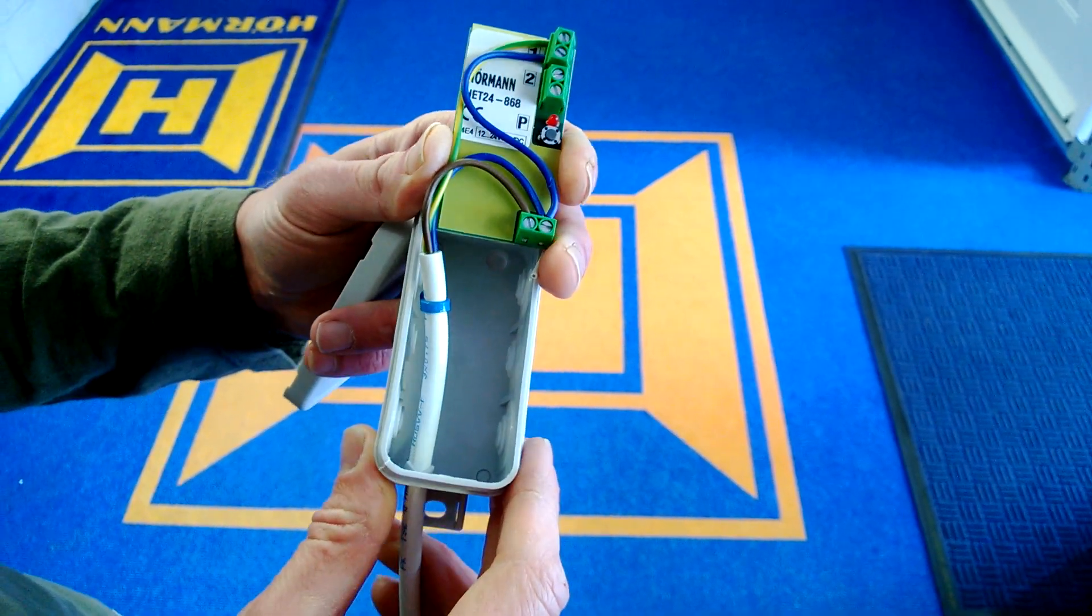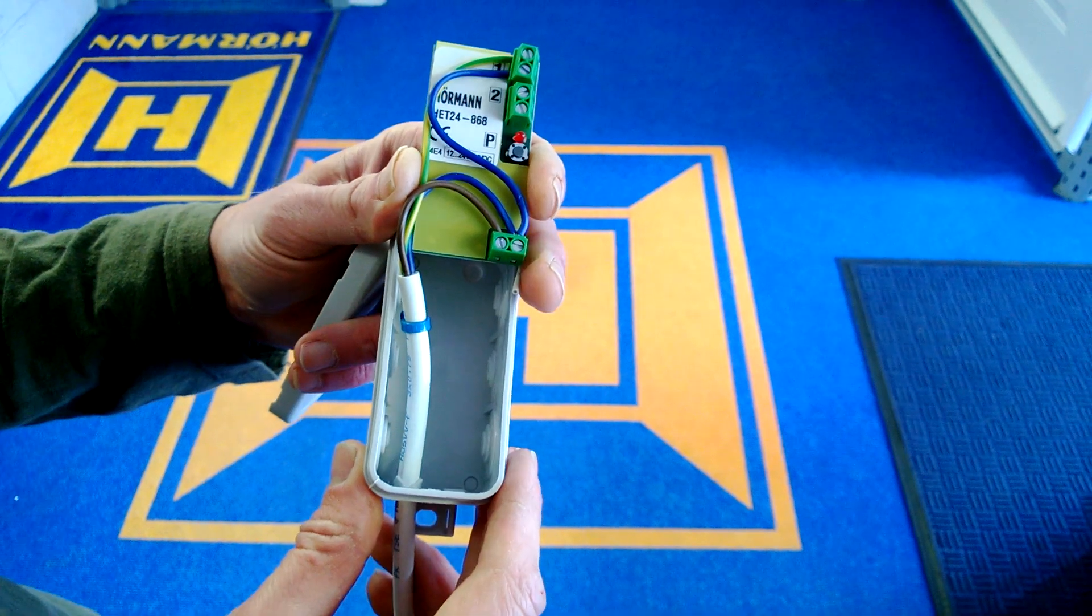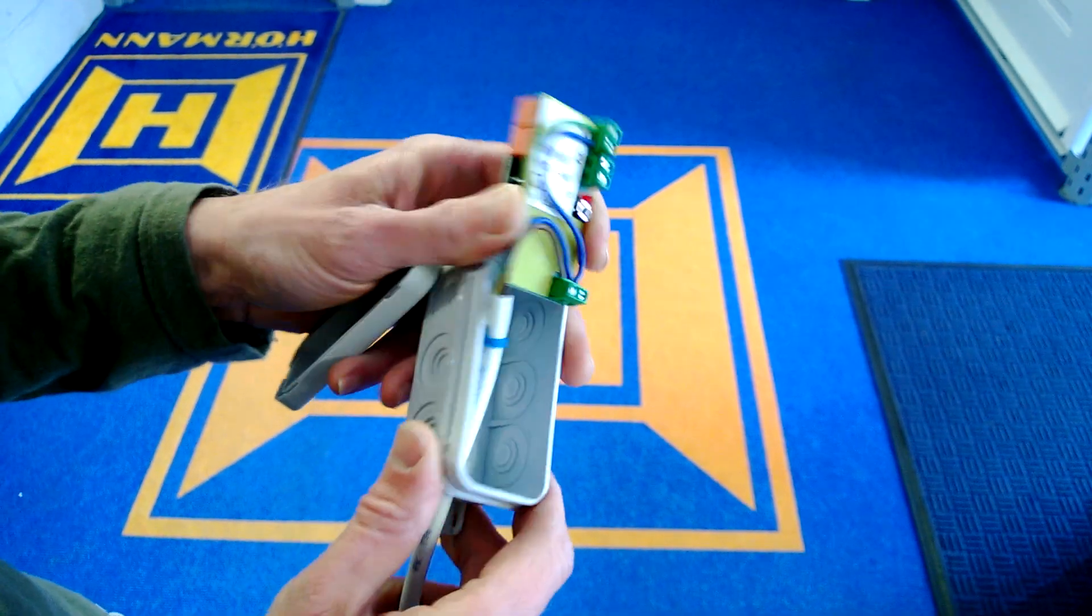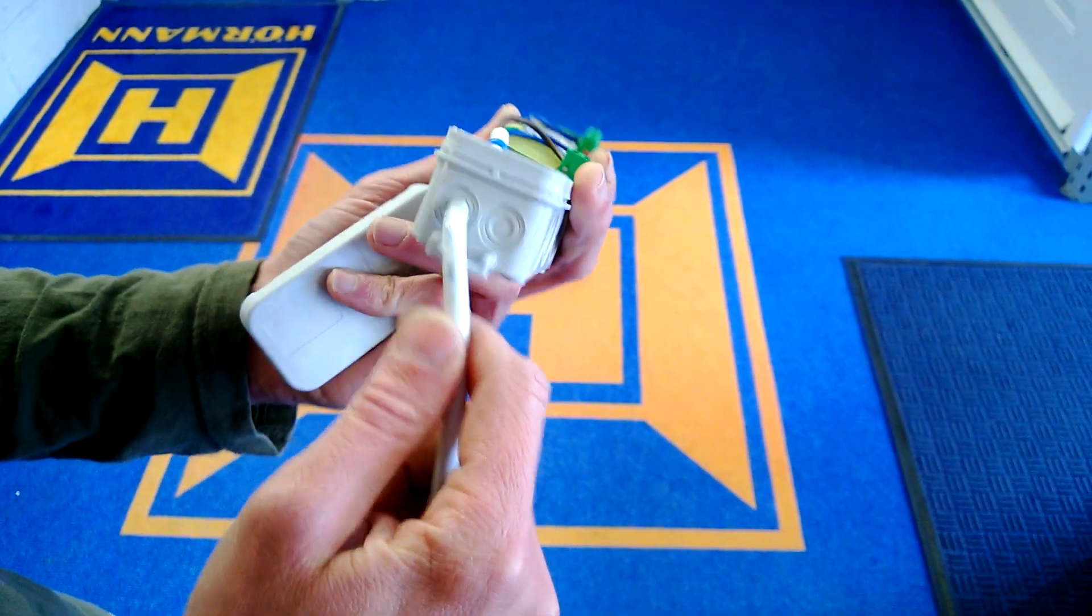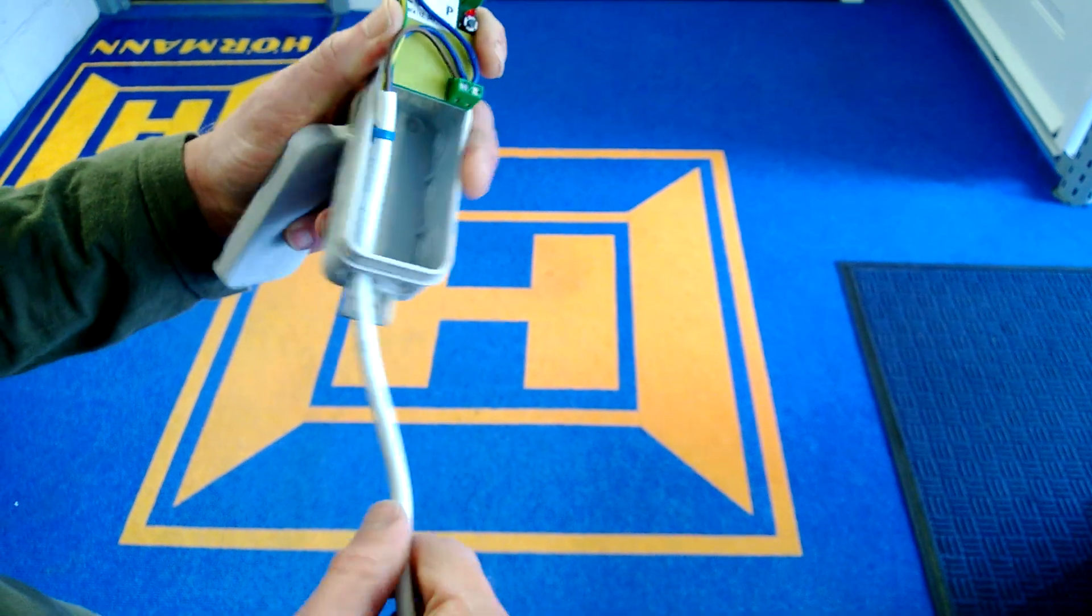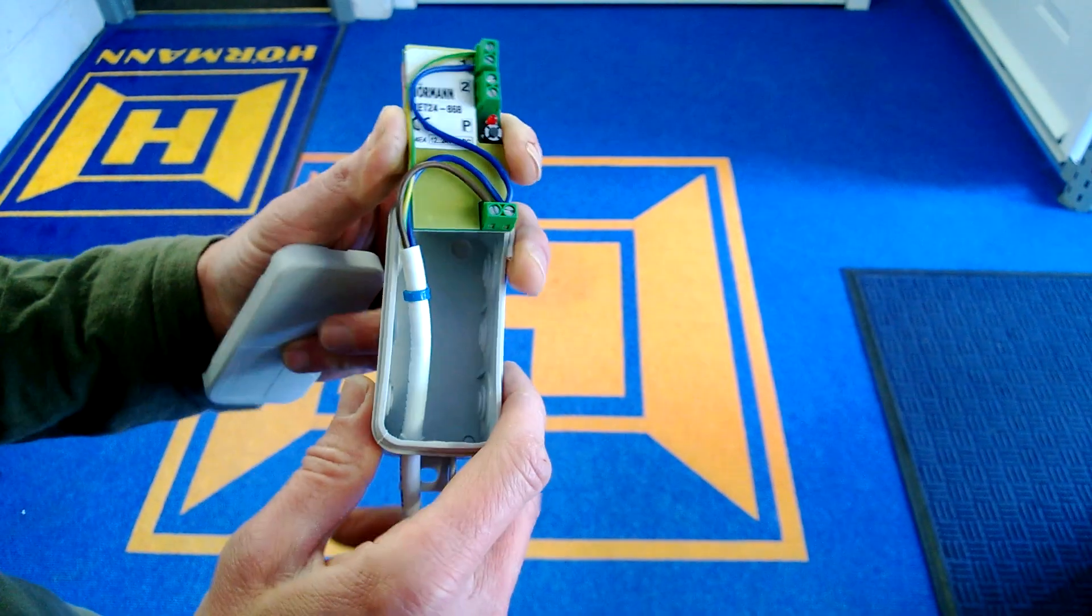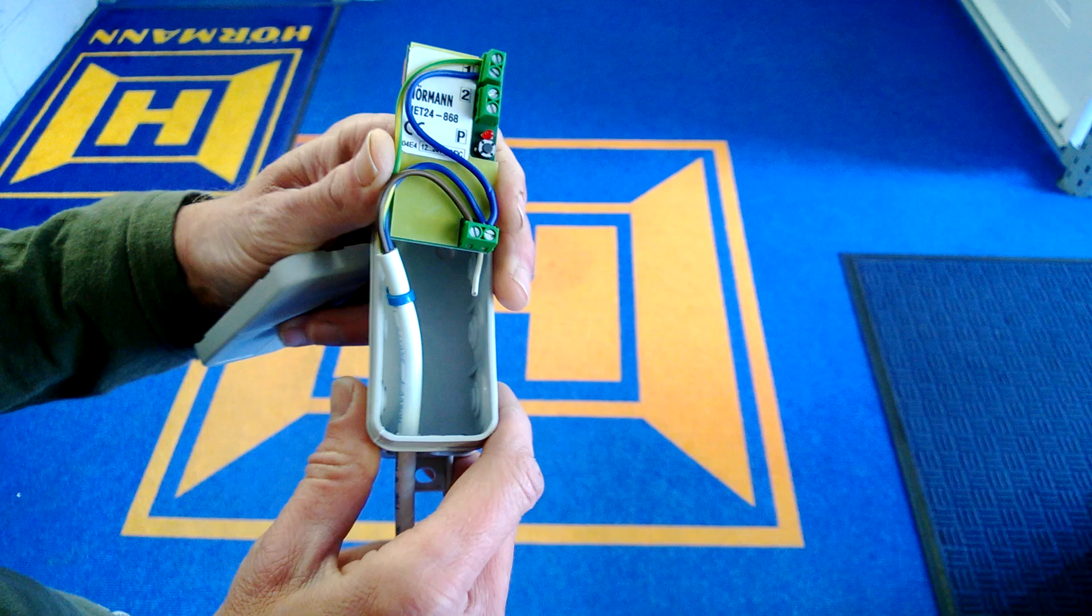Okay, here we are wiring up the Hormann HET 24 receiver. I've already wired this up and fastened the cable through the enclosure. We're using three core flex here, but it operates on 12 or 24 volts, so you can use low voltage cable as well.